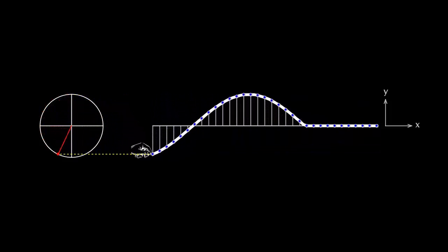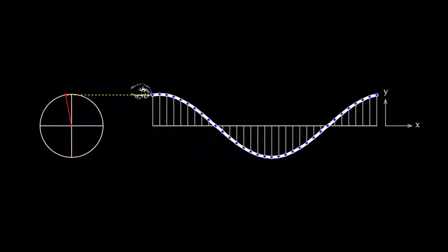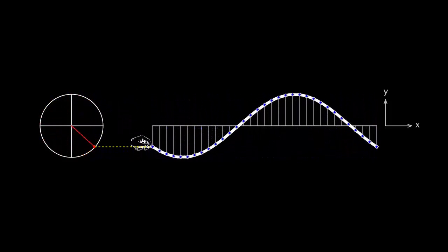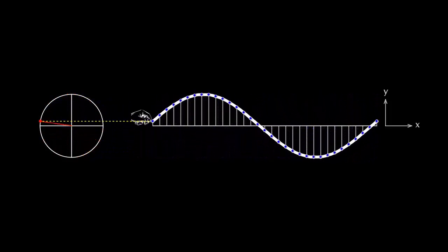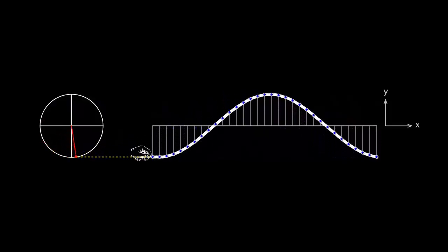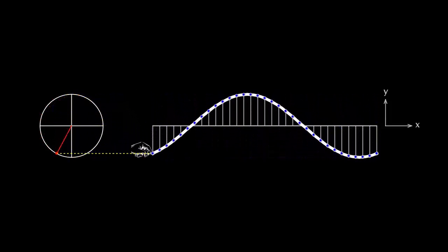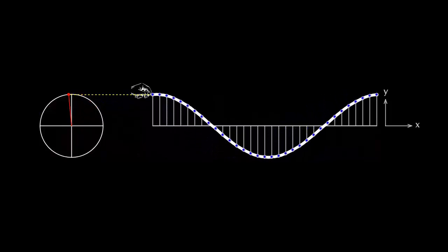So we have here a number of vibrating particles in different states of vibration at a given moment, forming the wave shape. This shape moves along the rope as vibrating particles change their positions with time.